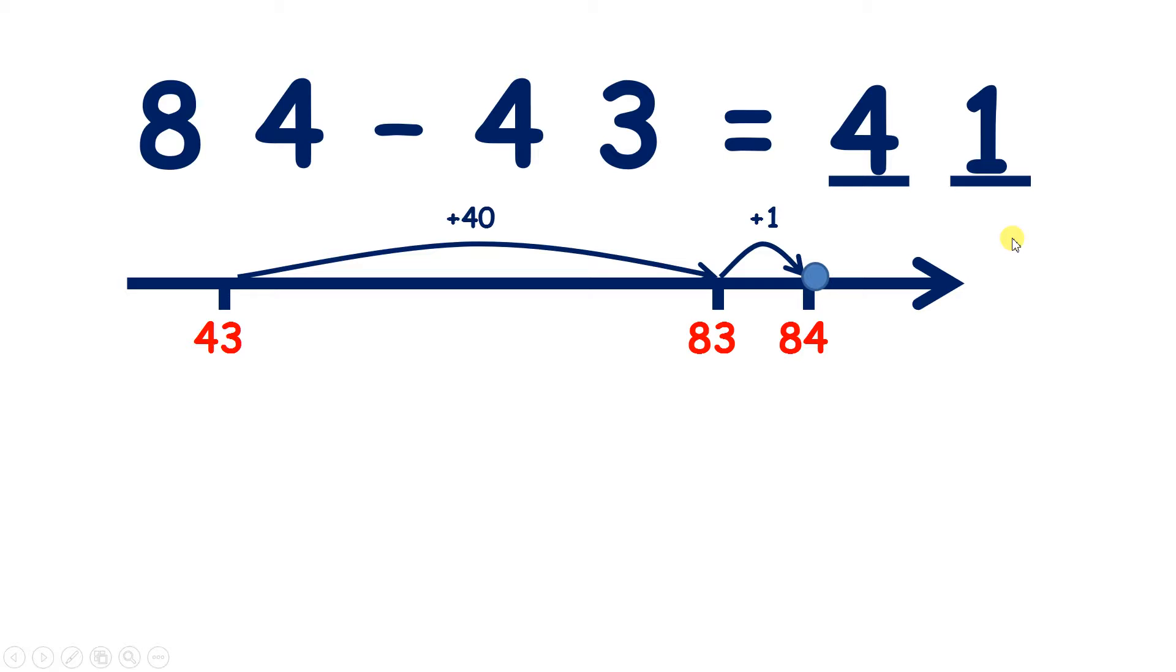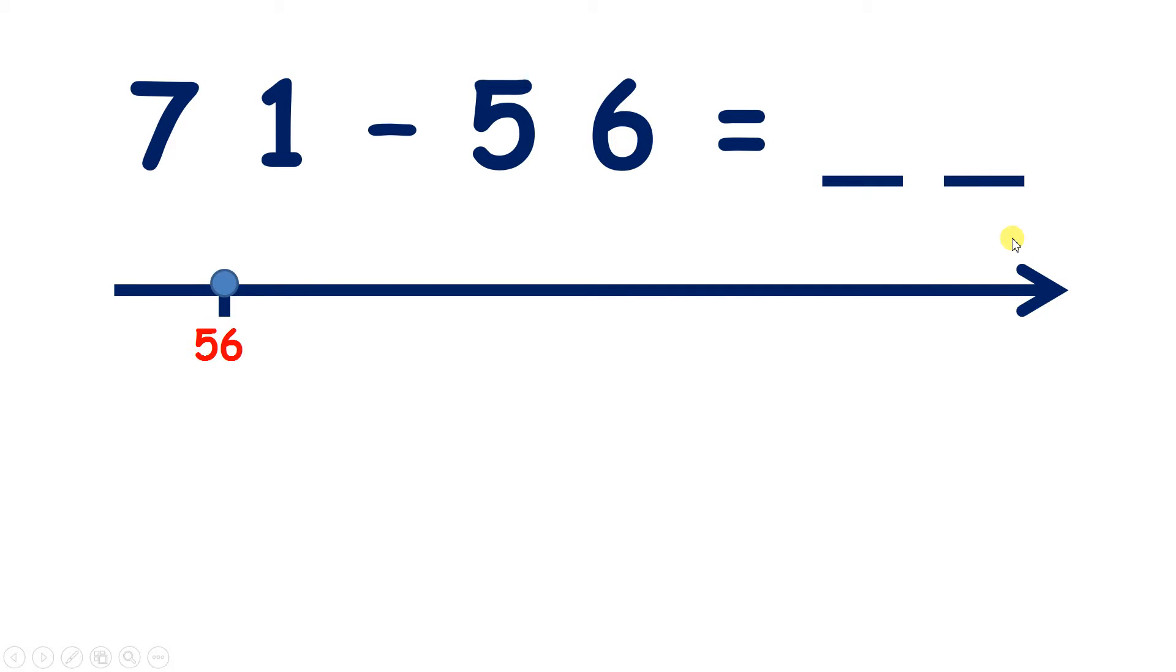Now 71 minus 56. So we can start on 56. Ten more gives us 66, and we can't add any more tens because 76 would be too many. So we have just one ten.